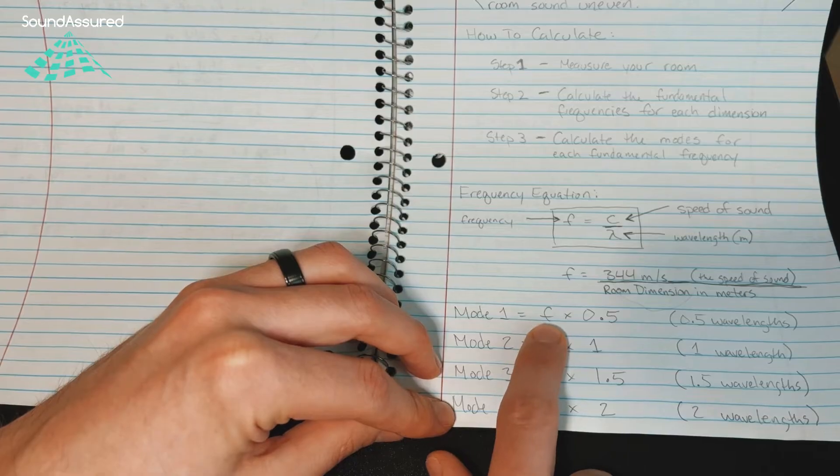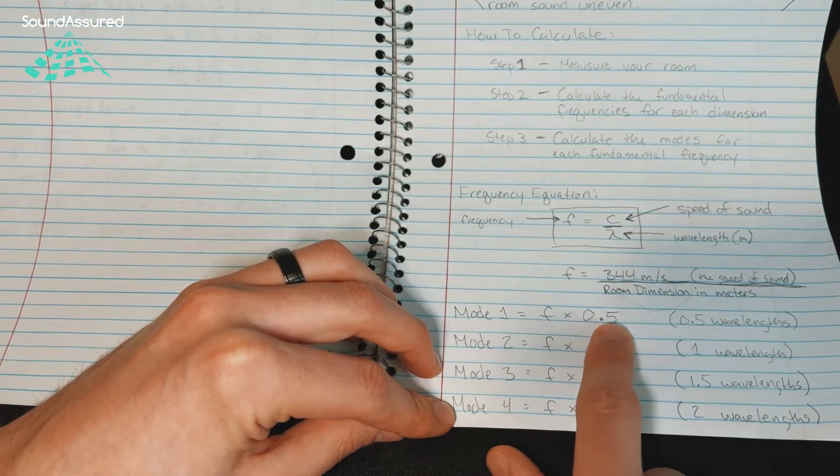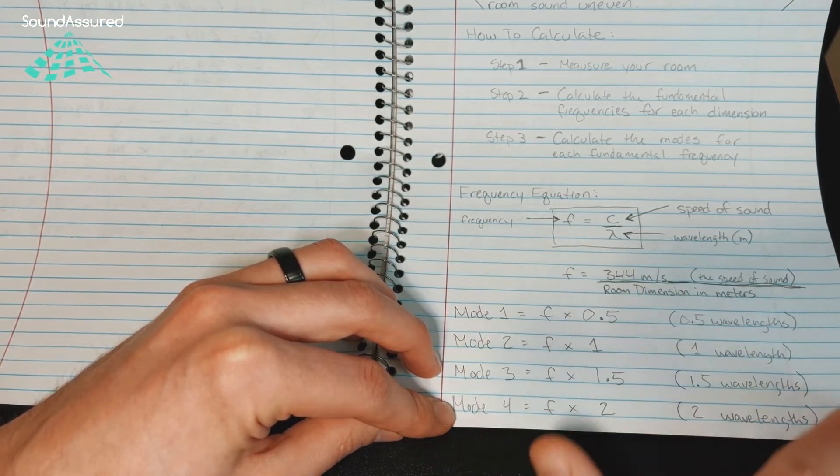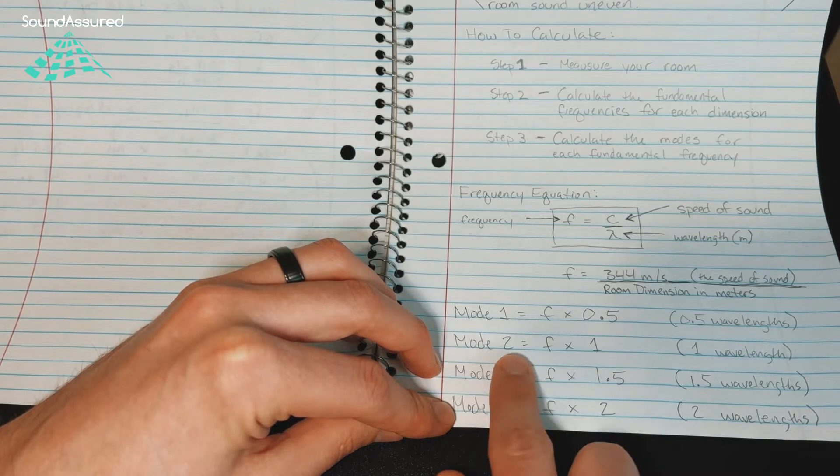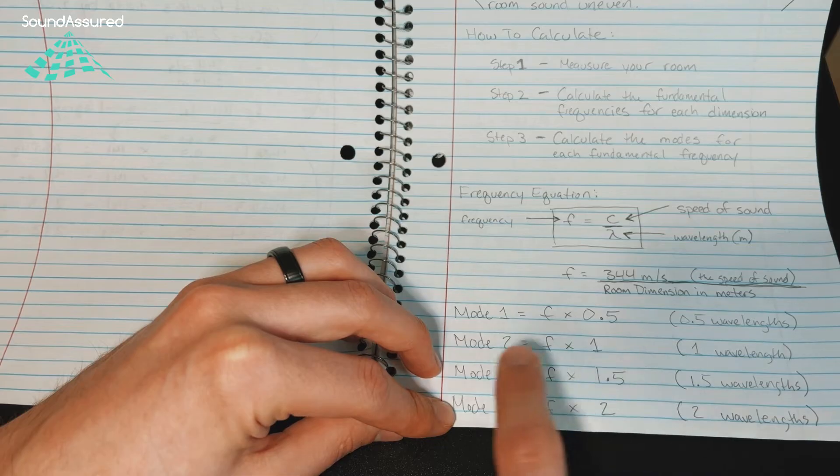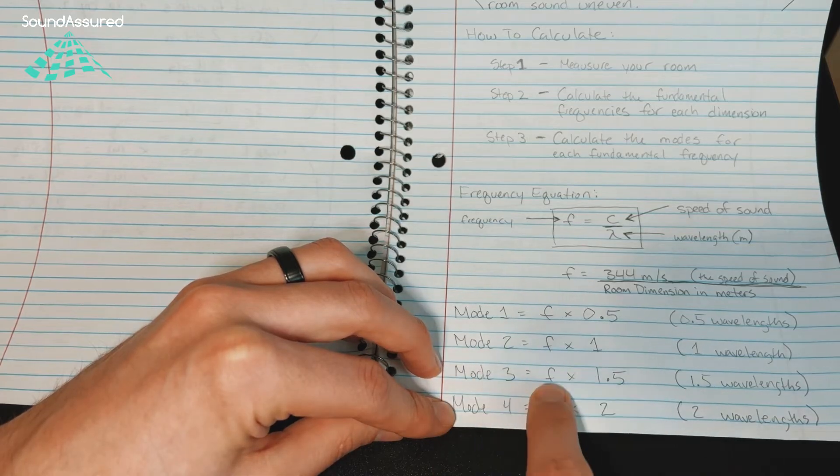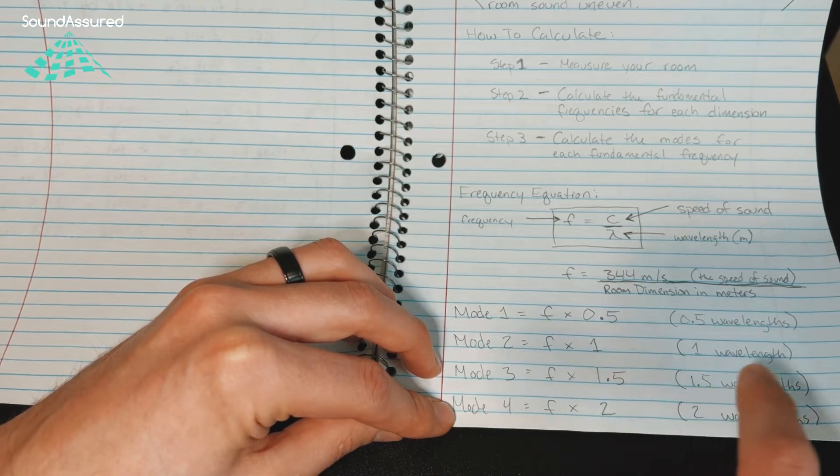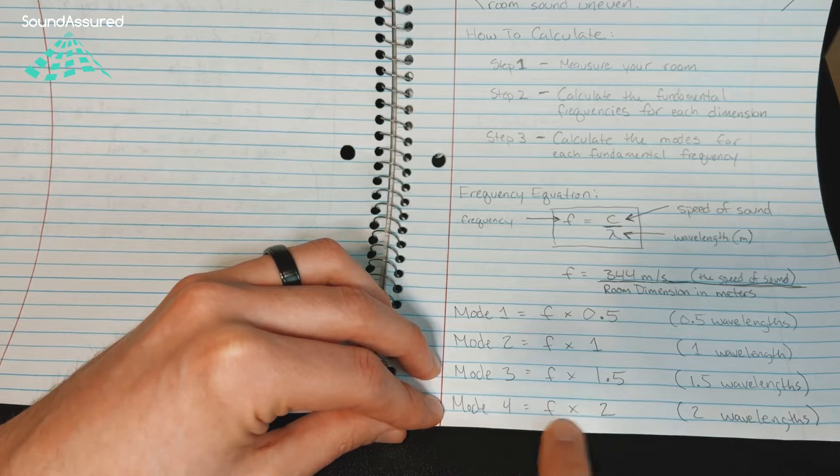The first mode is the frequency times 0.5, so 0.5 wavelengths. The second mode is the frequency times one, so just one wavelength. The third mode is frequency times 1.5. Fourth mode is frequency times two.